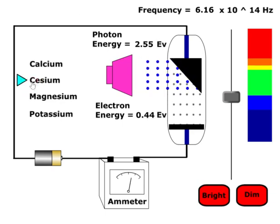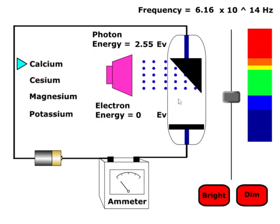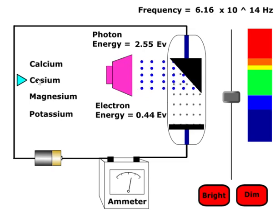So here's how you choose a metal. There's cesium, and you can see calcium doesn't emit at this frequency, but cesium does.